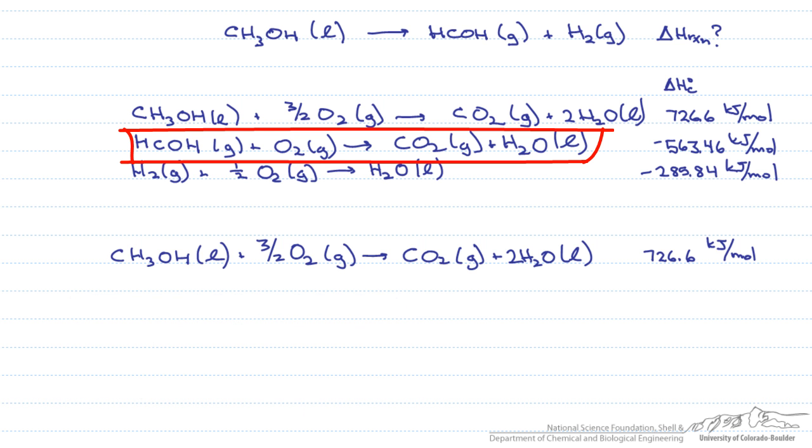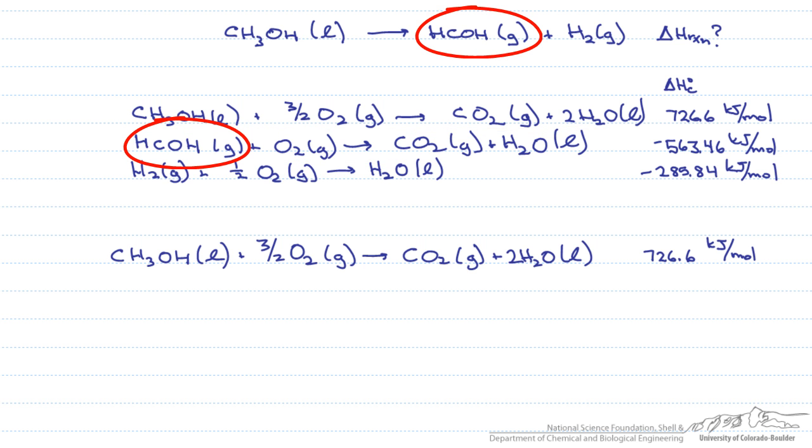Now let's look at the second reaction. Here we're combusting the formaldehyde. However, we need the formaldehyde as a product, not as a reactant. So we have to reverse the reaction. And by doing that we reverse the sign of the heat of the combustion. So note, instead of this being negative 563.46 kJ per mole, it's going to be positive 563.46.